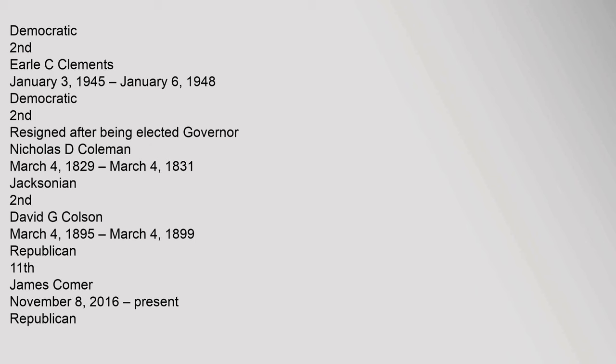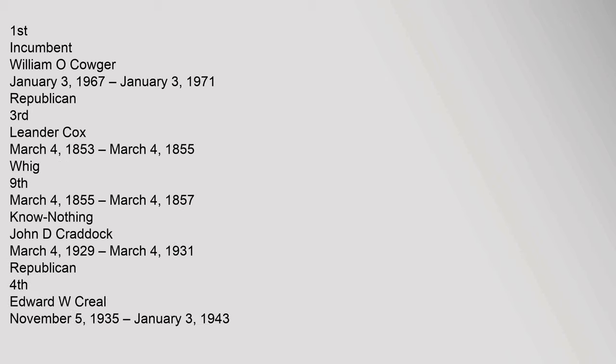David G. Coulson, March 4, 1895 to March 4, 1899, Republican, 11th. James Comer, November 8, 2016 to present, Republican, 1st, Incumbent. William O. Cowger, January 3, 1967 to January 3, 1971, Republican, 3rd. Leander Cox, March 4, 1853 to March 4, 1855, Whig, 9th; March 4, 1855 to March 4, 1857, Know-Nothing. John D. Craddock, March 4, 1929 to March 4, 1931, Republican, 4th.